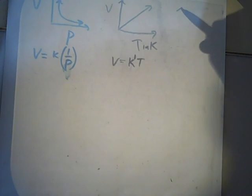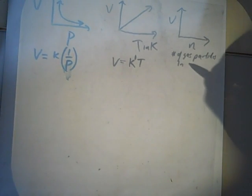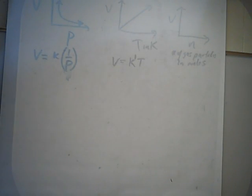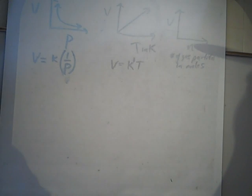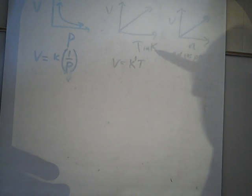What if we compare volume versus the number of gas particles in moles? What do you think the graph would look like? It would be a line. Should it go through the origin like temperature did? Yes — if there are no gas particles, there's no gas, so you won't have a volume. This graph goes through the origin when temperature is in Kelvin. If your temperature is in Celsius, then it doesn't go through the origin.